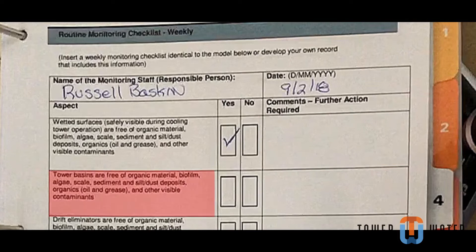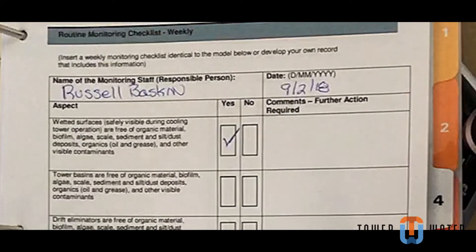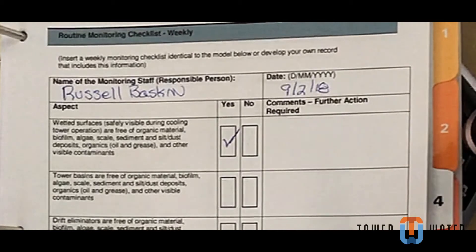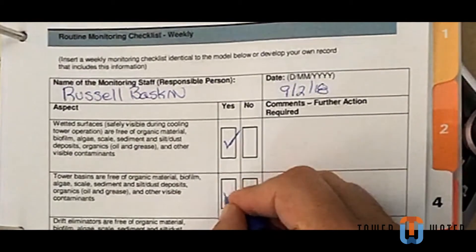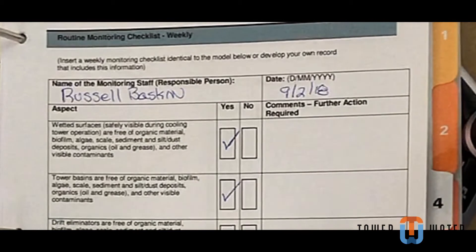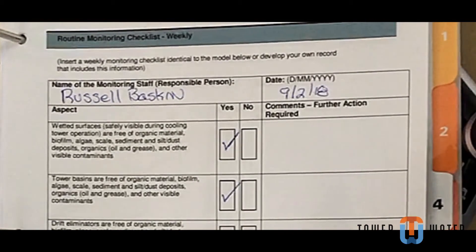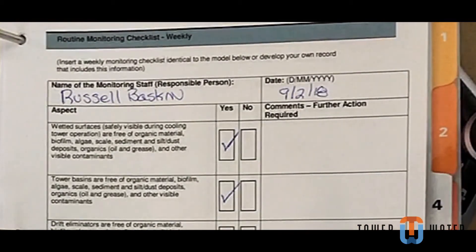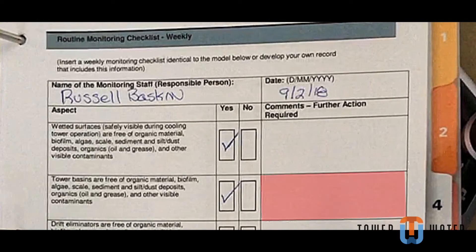Question 2: Tower basins are free of organic material, biofilm, algae, scale, sediments, silt, dust deposits, organics such as oils and greases, and other visible contamination. Check yes if basins are clean or mostly clean. Check no if basins contain contamination. If you check no, in comments write where it exists, when and how it will be removed.